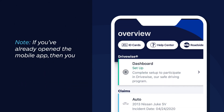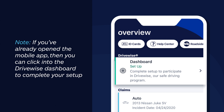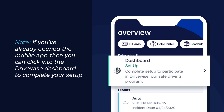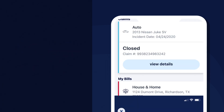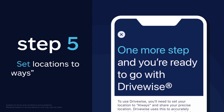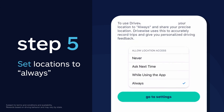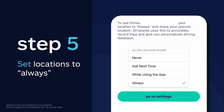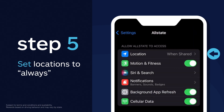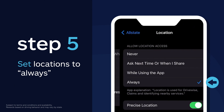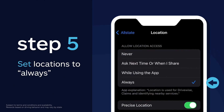And if you've already opened the mobile app, then you can click into the DriveWise dashboard to complete your setup. For this step, make sure your locations are set to always. Basically, this ensures that all of your trips are being captured and you'll receive the maximum savings for your safe driving.